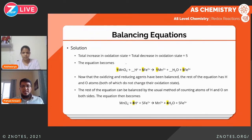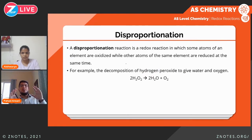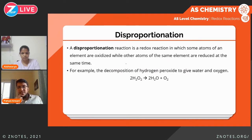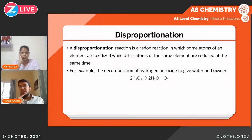That covers the entire balancing method — if you didn't follow, pause the video and read the explanation. Now a different kind of redox reaction is disproportionation. This is a little unusual because, rather than one element being oxidized and another being reduced, some atoms of the same element are both oxidized and reduced at the same time.